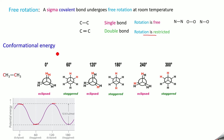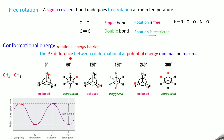Here we discuss an important term: conformational energy, otherwise called the rotational energy barrier. It is defined as the potential energy difference between the conformation at potential energy minima and maxima. The gap between the minimum and maximum on the potential energy diagram is what we call conformational energy. For ethane, this value is equal to 12.6 kilojoules per mole.